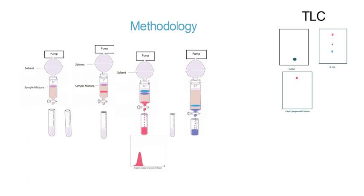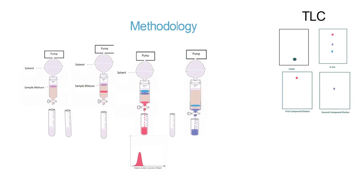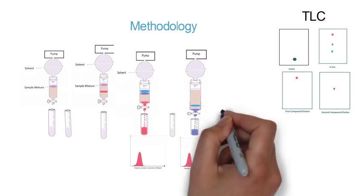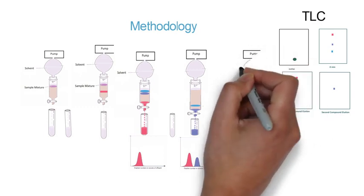After that, the second compound has been separated out, and we can run a TLC of that particular compound. Now we can locate the spot, so comparing the TLC number two, you can see the spot of compound number two, and also you can see the chromatogram. Thirdly, now the last compound has been remaining.